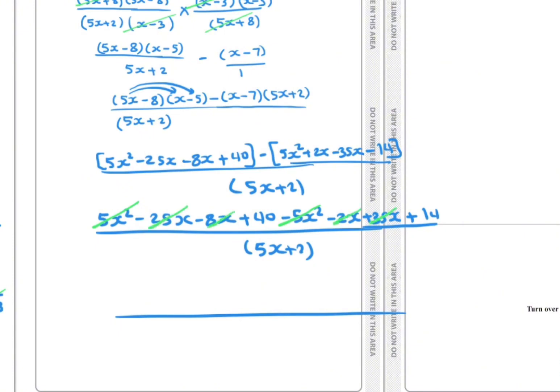So we have 40 plus 14, which equals 54. So the numerator is 54 over 5x + 2. This is the simplest form.